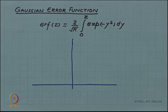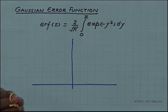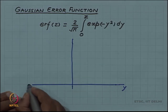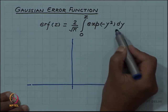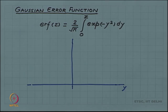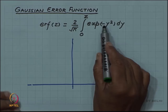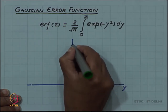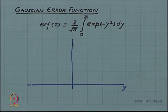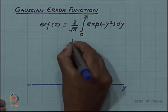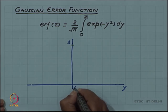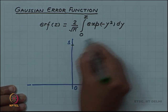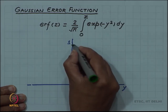I have used y as the integration variable so as not to confuse it with the x in our argument x by 2 square root of Dt. If you look at the function e^(−y²), this is a nice symmetric function — at plus y and minus y it will have the same value. At y equals 0, e^0 equals 1, so the function has a value of 1 at y equals 0, and then decreases as you increase y because of the negative sign.